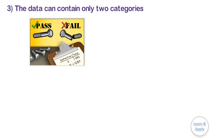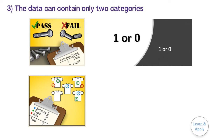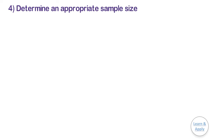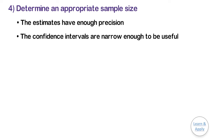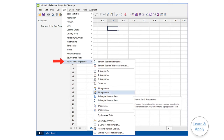Third, the data can contain only two categories, such as Pass or Fail and 1 or 0. If your data contains counts, such as the number of defects per unit, then use two sample Poisson rate test. Fourth, determine an appropriate sample size. Your sample size should be large enough so that the estimates have enough precision, the confidence intervals are narrow enough to be useful, and you have adequate protection against type 1 and type 2 errors. To determine the appropriate sample size, go to Power and Sample Size for two proportions.